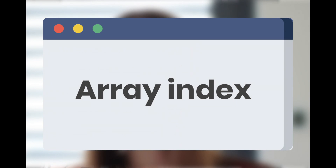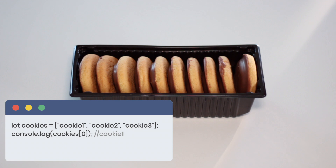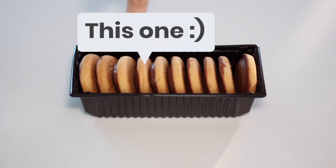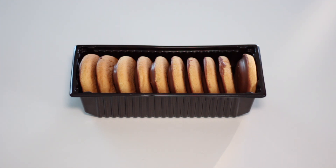Now let's talk more about indexes and the most popular array methods. Let's imagine that our box with cookies is an array and each cookie is one element of this array. Every element has its own index, and our first element has index 0, the second element has index 1, and the next element has index 3. To select the 5th cookie from the box we will take the cookie with the 4th index.